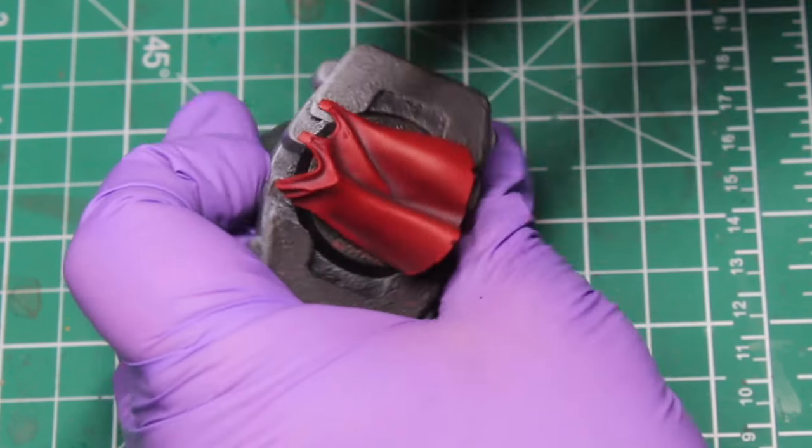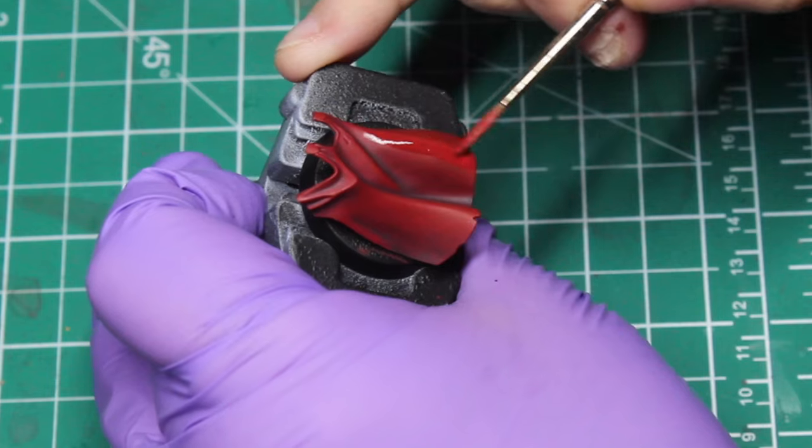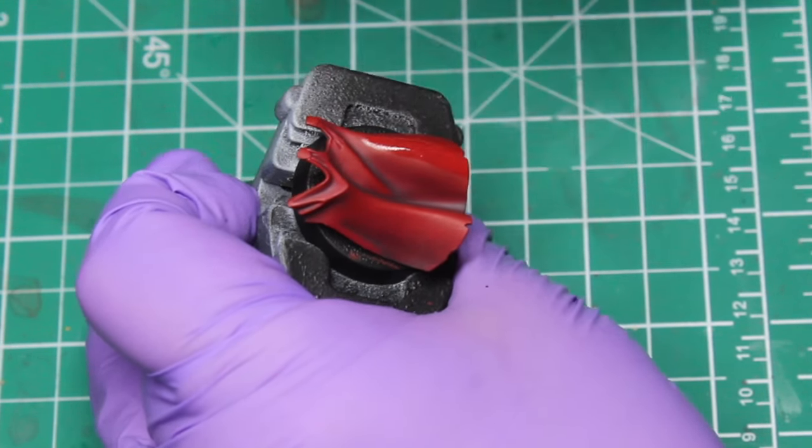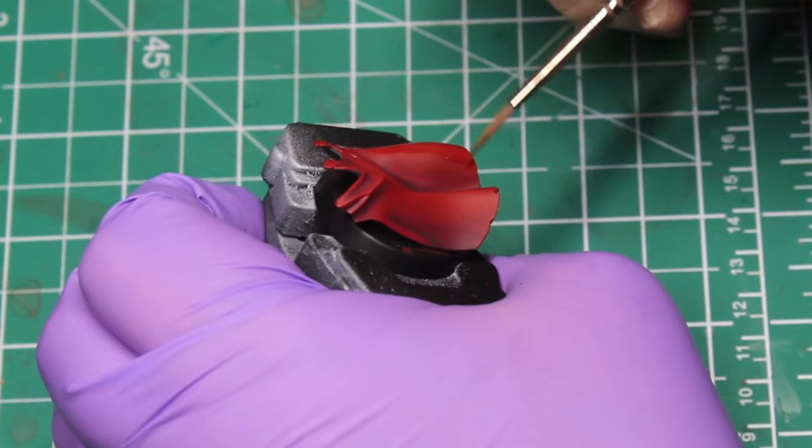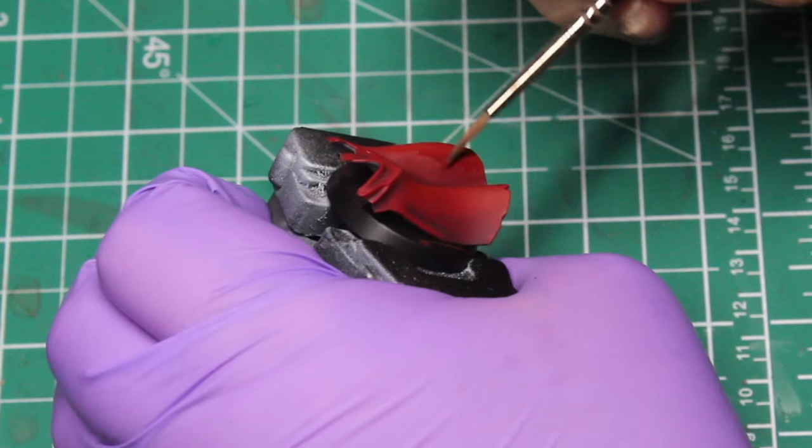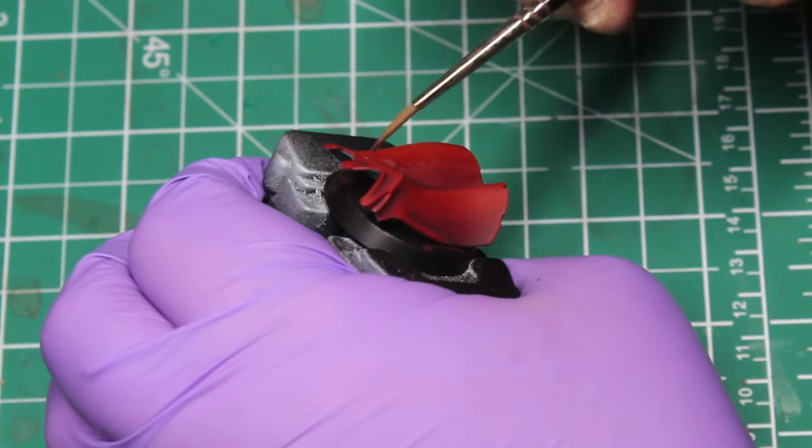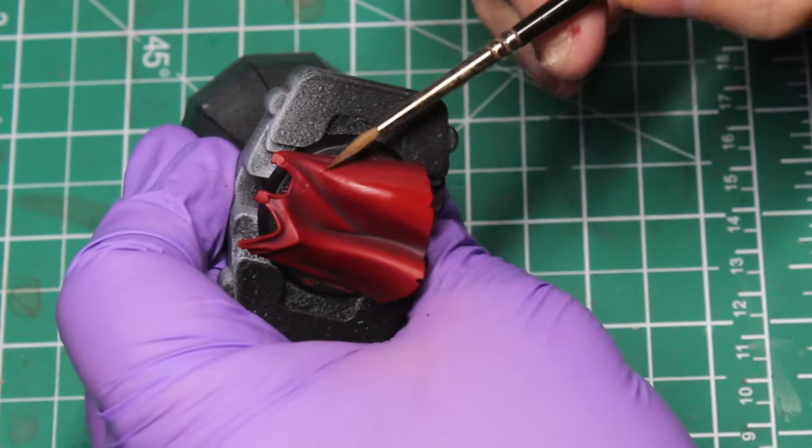Right, so what we're going to be doing now is once we're all happy with this, we're just going to be getting Mephiston Red again. This is basically again a glaze consistency and we're basically layering that glaze over the top of the highest points, then rinsing off the brush and then pulling the pigment up to the highest point.